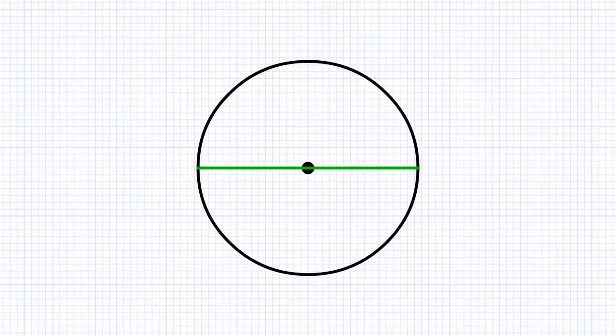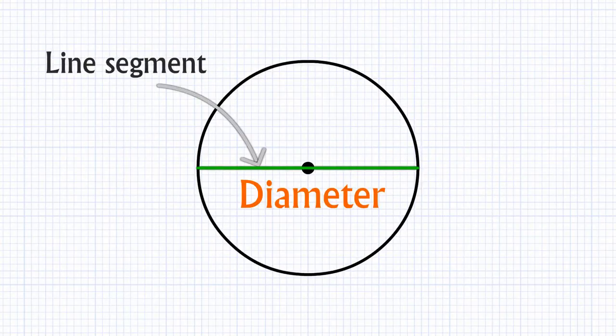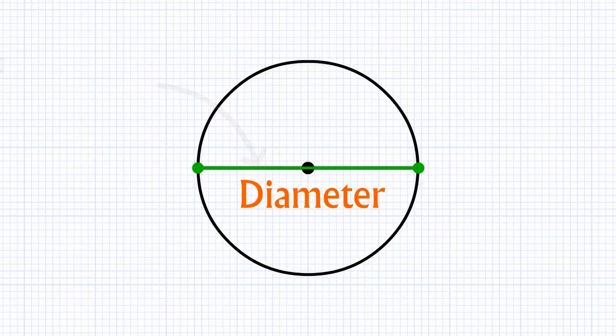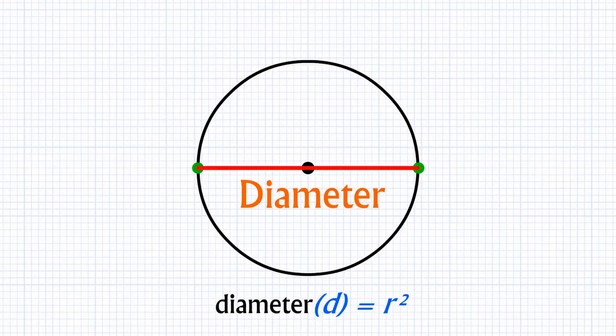And here we have a diameter. Diameter is a line segment passing through the center and touching two endpoints on the edge of the circle. And as we know, diameter is two times radius.